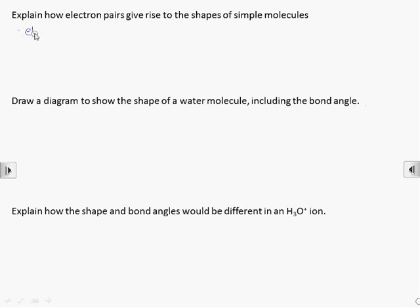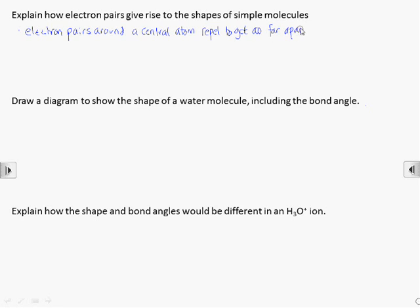The shape of a simple molecule is determined by the arrangement of the electron pairs around the central atom. By electron pairs, we mean either the bonding pairs of electrons by which other atoms are covalently bonded to the central atom, or the lone pairs on the central atom. Electron pairs repel each other, so they arrange themselves around the central atom so that they are as far apart as possible.